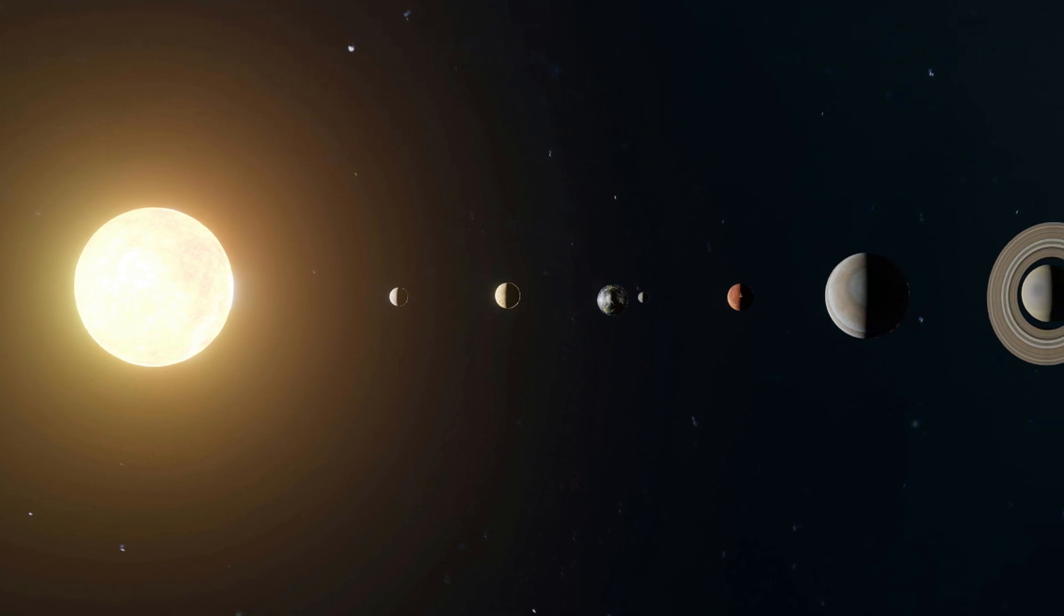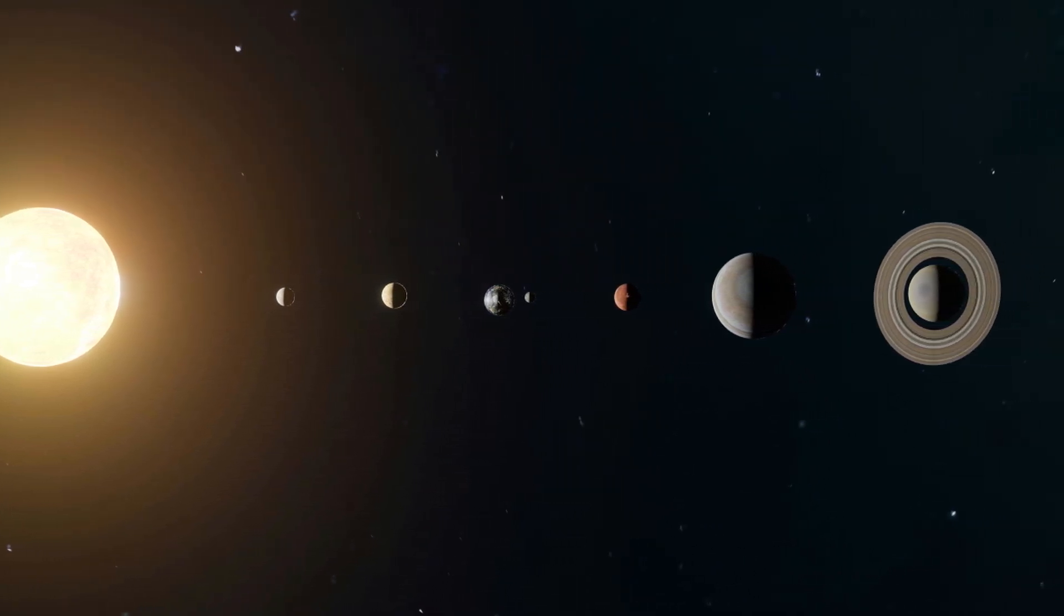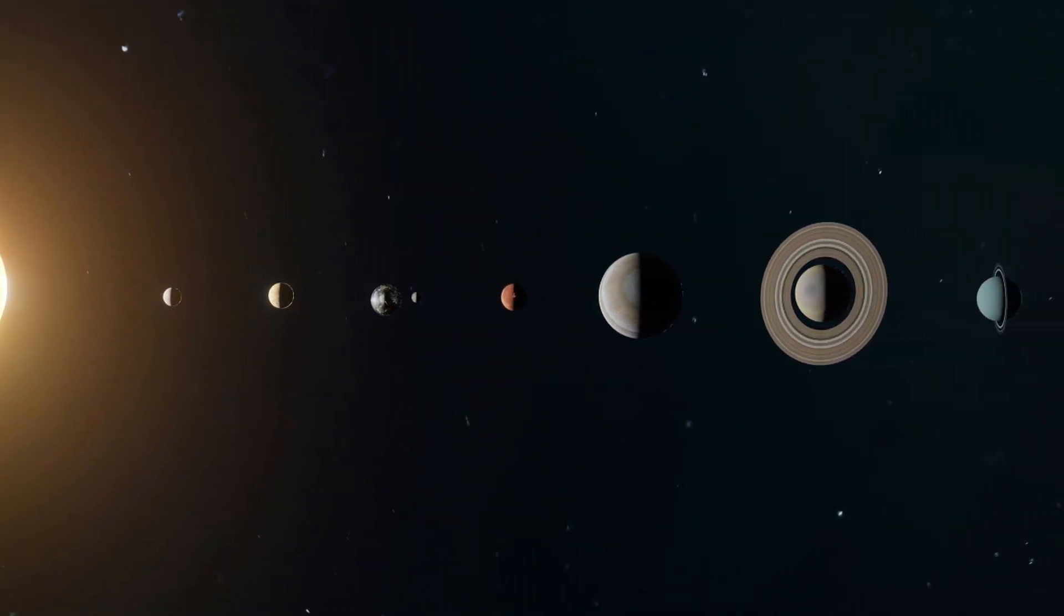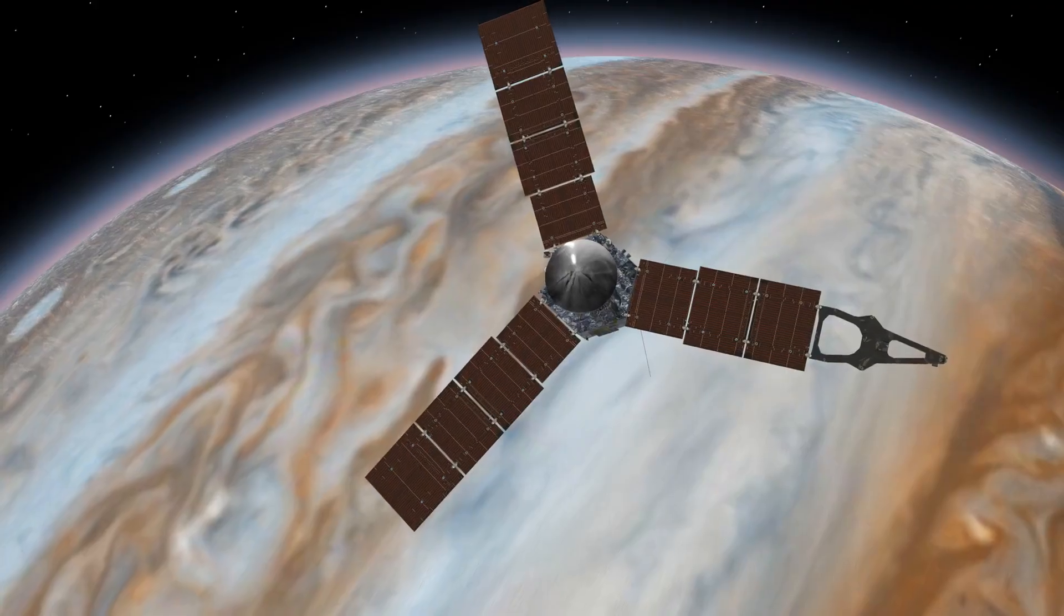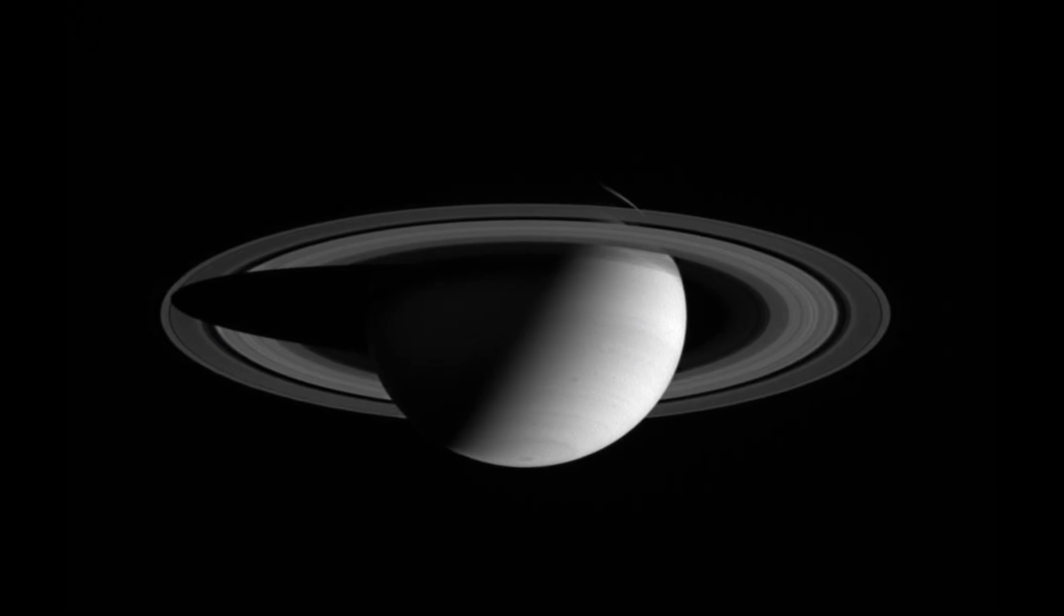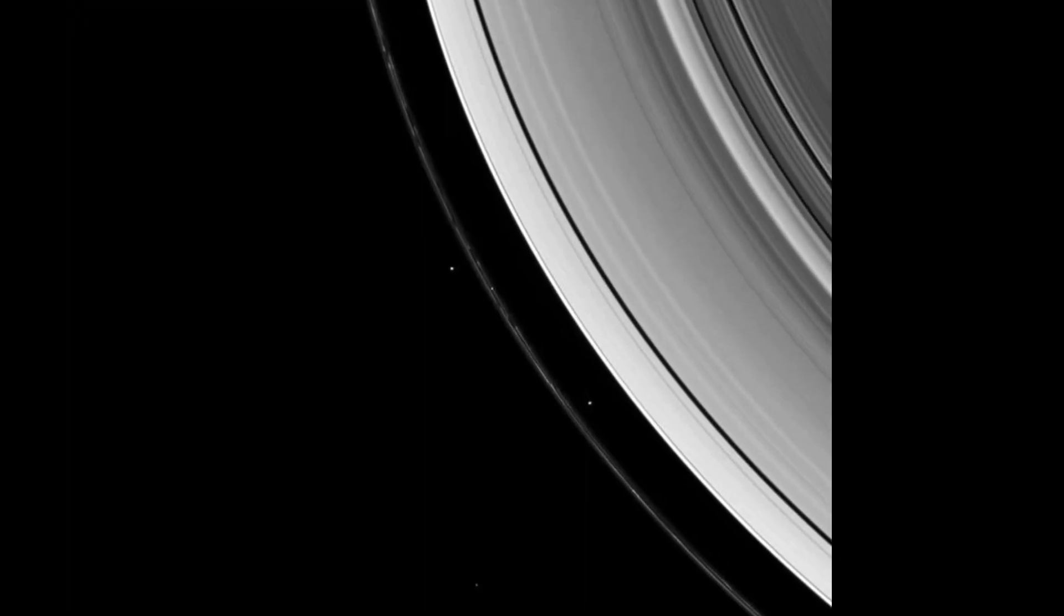The spacecraft was designed to take advantage of a rare planetary alignment that occurs only once every 176 years. A cosmic window that would allow it to visit Jupiter, Saturn, and their most undocumented moons.